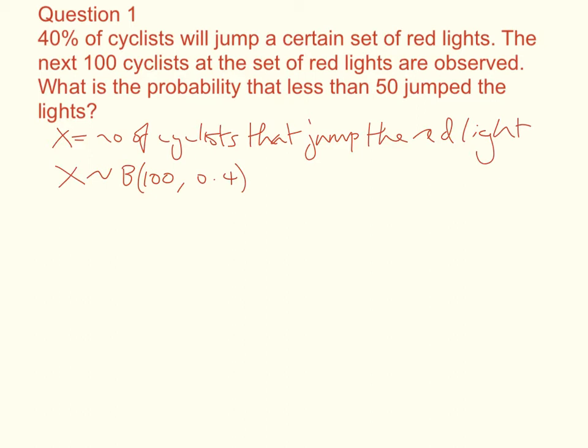We want to approximate this, so we're going to say that x is approximately the same as y, and we're going to define y as having a normal distribution. And we're going to do np to find the mean, so 100 times 0.4, which is 40. And the variance is going to be np, so these two multiply together, times 1 minus p, which is 0.6. That will give us 24. So we've established that something with a binomial distribution of 100 and 0.4 is approximately the same as something with a normal distribution of a mean of 40 and a variance of 24.